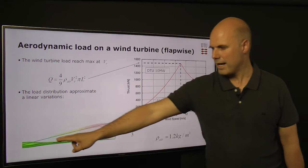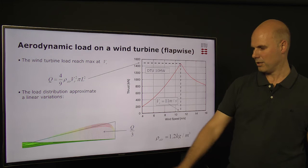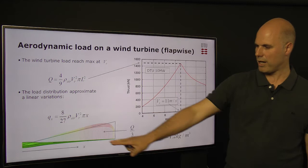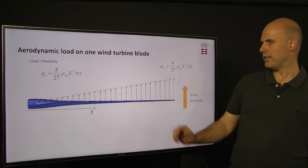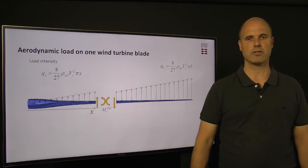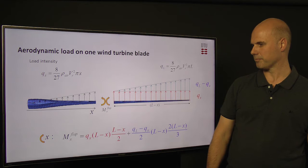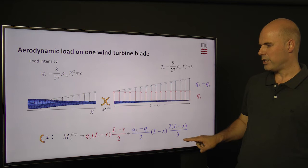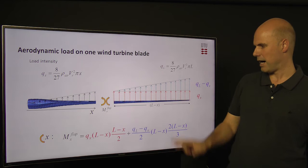This load will be distributed onto the three wind turbine blades. The actual distribution will be a near-linear function going from zero load at the root up to a certain load intensity at the blade tip, as shown in the equation describing this variation as a function of x. When we calculate the resulting moment, the red part comes from the uniform part of the linear distribution of the load, and the blue part comes from the linear variation part of the loading.